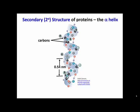Let's talk about secondary structure. There are actually two or even three components of secondary structure. We'll talk about the alpha helix first.